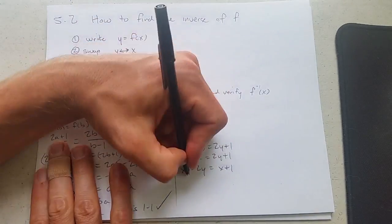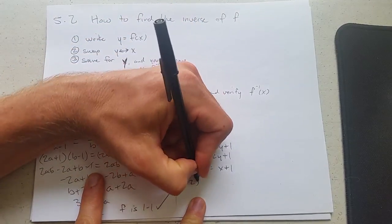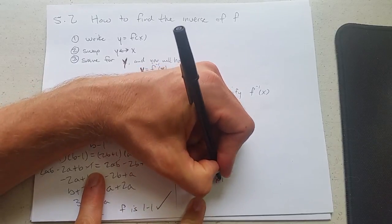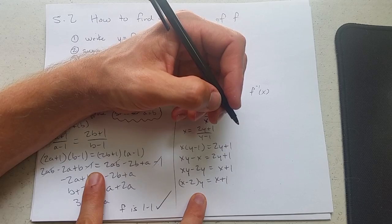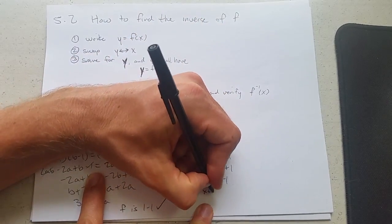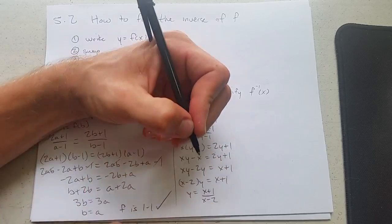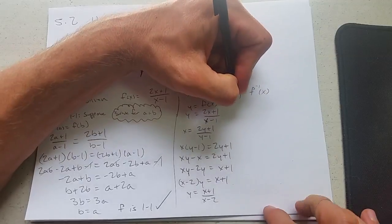Now we can use my favorite f word, which is factoring. y is almost by itself. One last thing to do. Divide by x minus 2. This is f of x. This is f inverse of x.